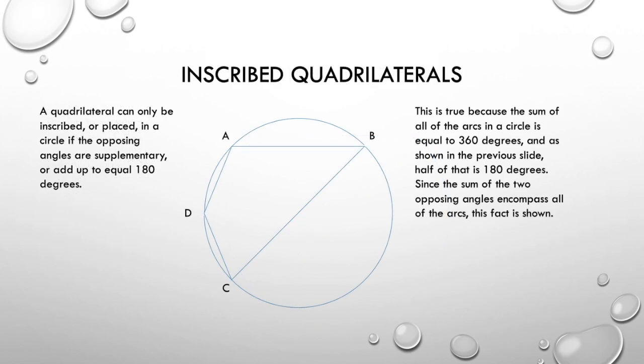Now, we talk about inscribed quadrilaterals. Opposite angles of an inscribed quadrilateral are supplementary. Let's prove it. We know the whole circle is taken to 360 degrees or 2π in radians. In our diagram, angle DAB equals in degrees to half arc DCB. Angle DCB equals in degrees to half arc DAB. Since arc DAB plus arc DCB equals 2π, so angle DAB plus angle DCB equals half 2π, which is π.